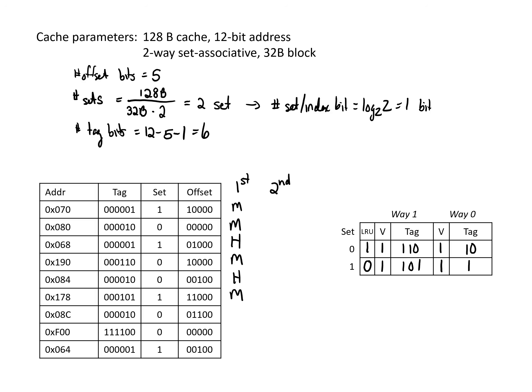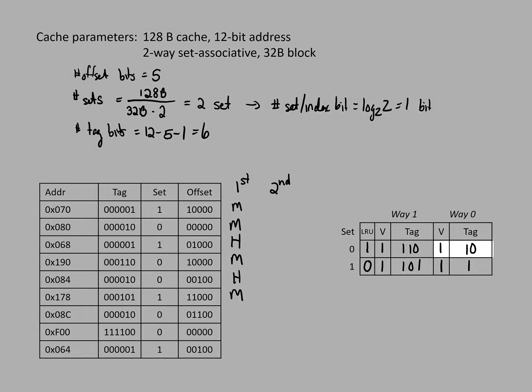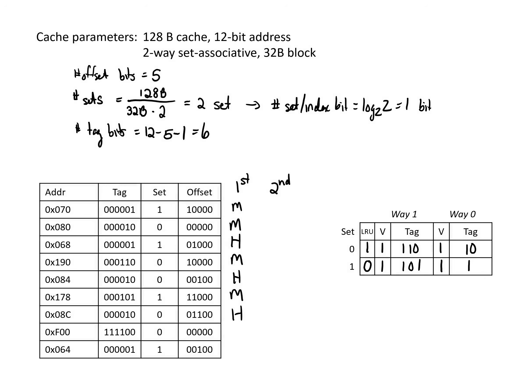For the next address, we're looking at set 0 for tag 1,0. We go to set 0 and see that tag 1,0 is indeed in our cache, so this is a hit. Our LRU bit already correctly shows way 1 as least recently used. The following address is a miss — we're looking for a long tag in set 0, it's not there. We replace way 1 per our LRU bit, fill it in with tag 1,1,1,1,0,0, and update our least recently used bit to way 0.